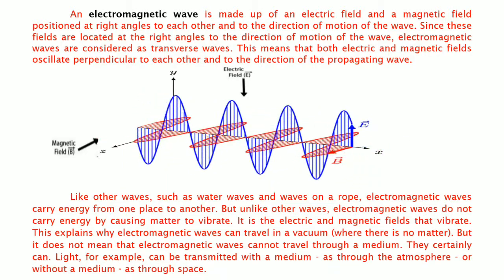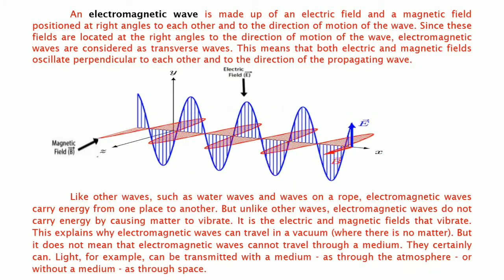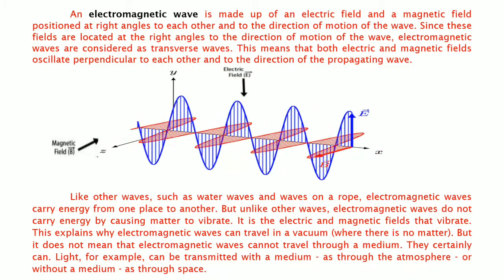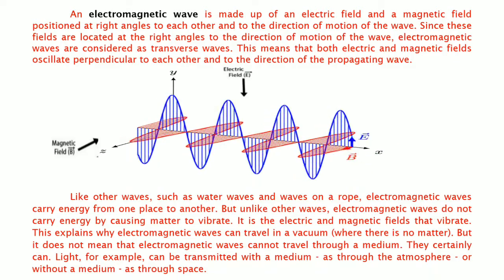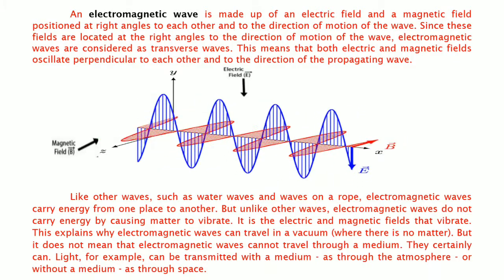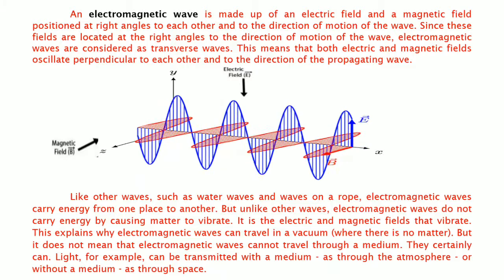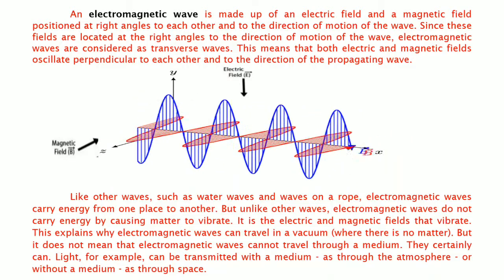Since these fields are located at the right angles to the direction of motion of the wave, electromagnetic waves are considered as transverse waves. This means that both electric and magnetic fields oscillate perpendicular to each other and to the direction of the propagating wave.